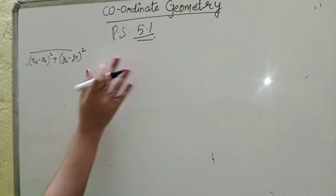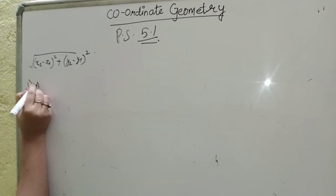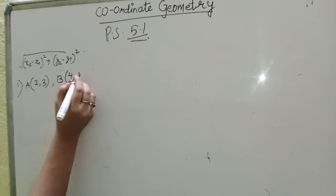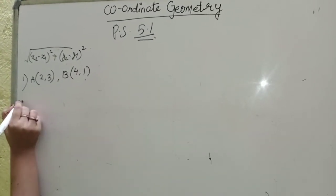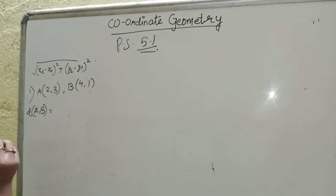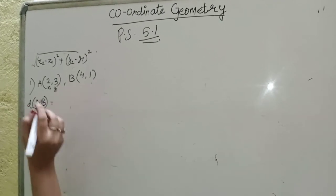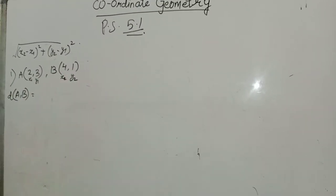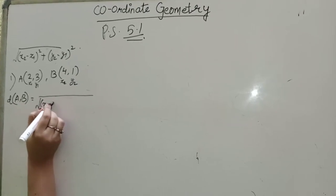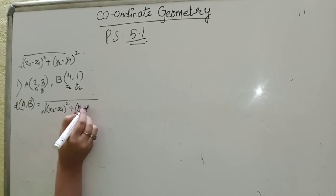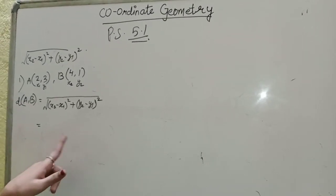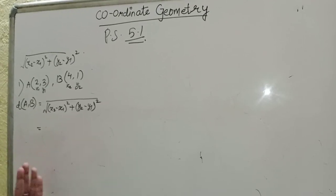So the first problem in Practice Set 5.1 is: A(2, 3) and B(4, 1). We have to find the distance between A and B. For convenience, we label A as (x1, y1) and B as (x2, y2). The distance of AB equals the formula: √[(x2 − x1)² + (y2 − y1)²]. You have to write this formula every time — it carries one mark in the board exam as well.